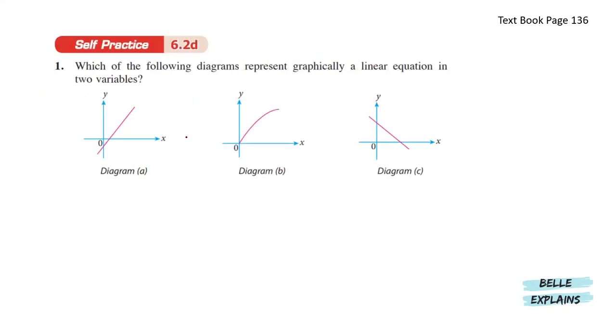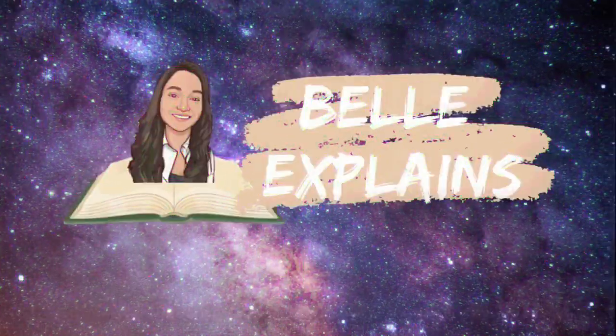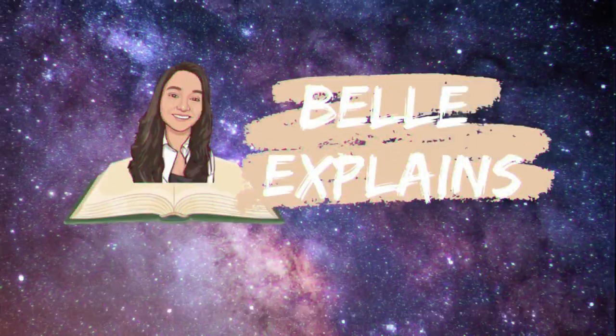Self-practice 6.2d. Which of the following diagrams represent graphically a linear equation in two variables? So graphically represented linear equations should form a straight line. In these diagrams here, the only ones that are representing a linear equation are diagrams A and C. That's all guys. Thank you for watching Bell Explains. See you in our next video. Bye!